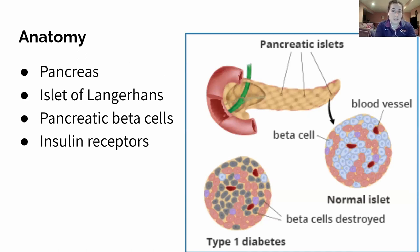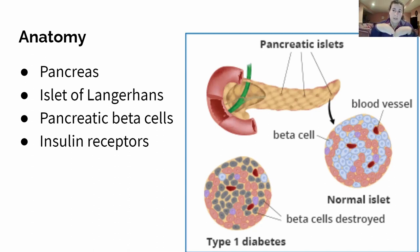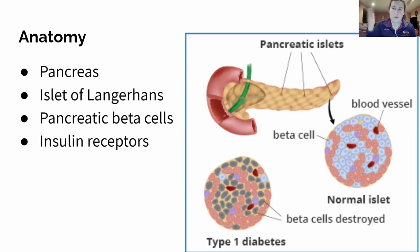Remember what insulin does: it bonds to a receptor, and then that opens up a channel that allows glucose to go into the cell and be stored, which therefore lowers the amount of sugar in the blood — it lowers your blood sugar.